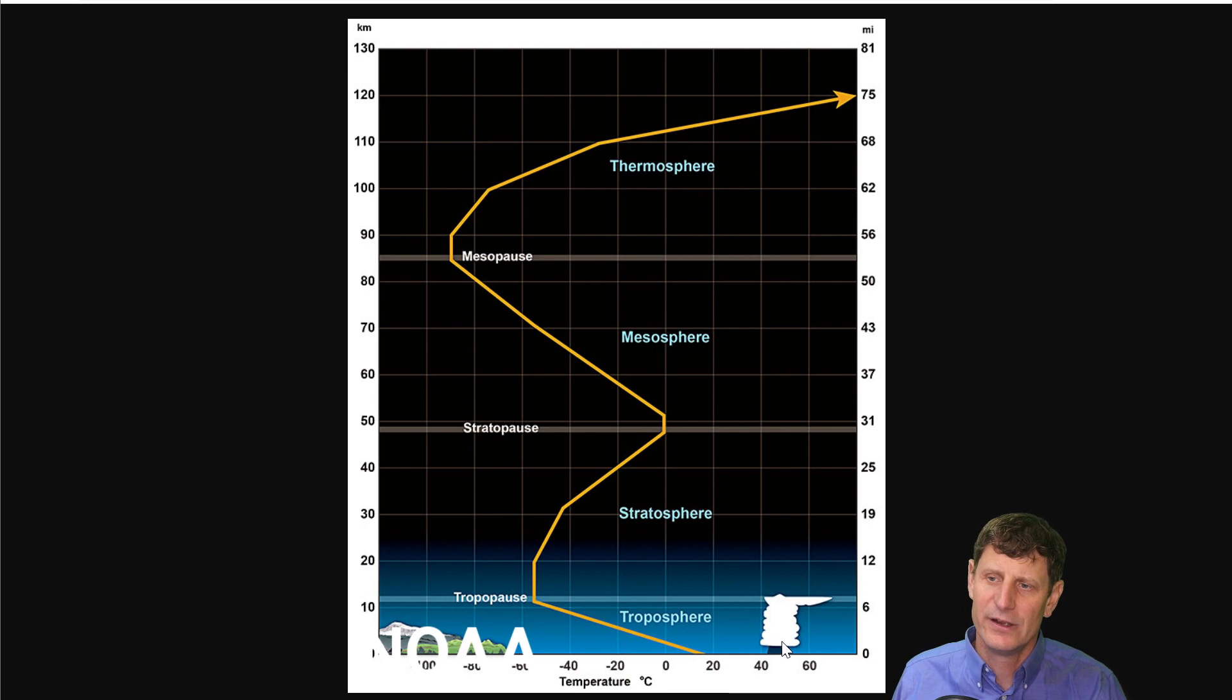This is a classic anvil-type storm cloud. The cloud has such vertical development that it actually hits the top of the troposphere, bumps up against the tropopause, and then forms an anvil-shaped cloud head on it.